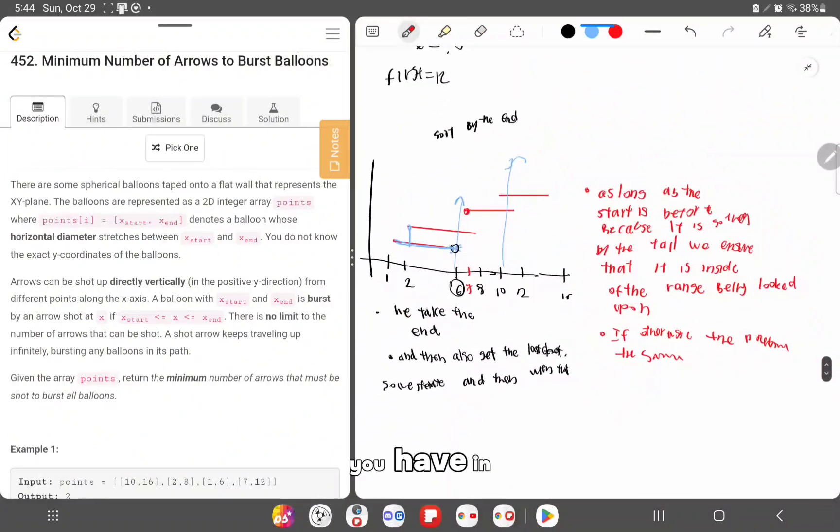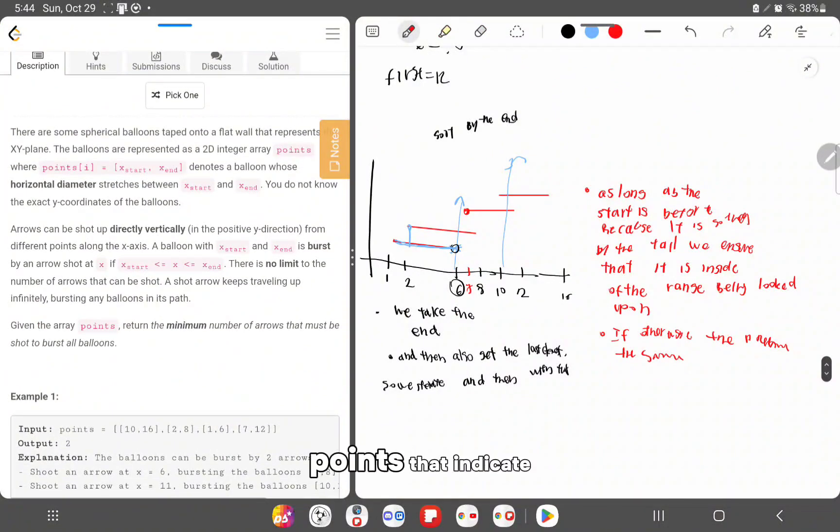The only thing you have in the problem is that you have some points that indicate the x start and x end, which means that it indicates the width of a balloon.